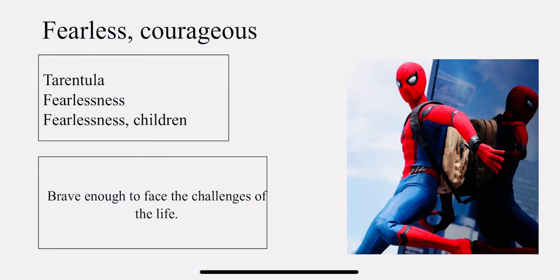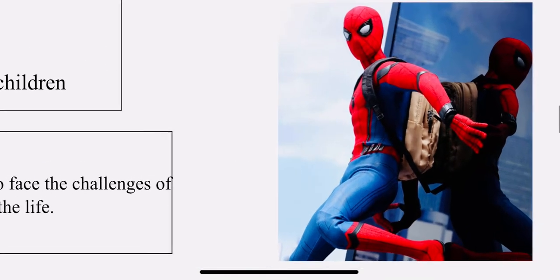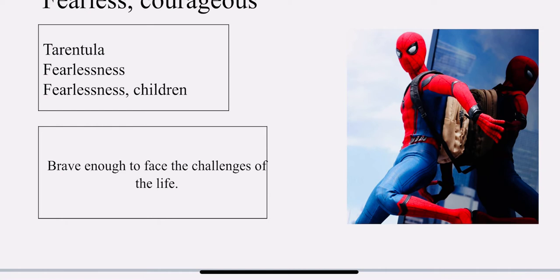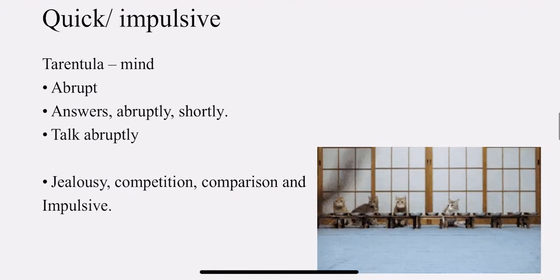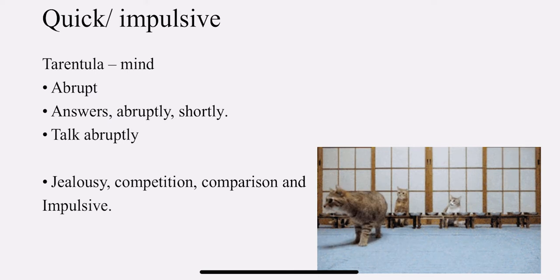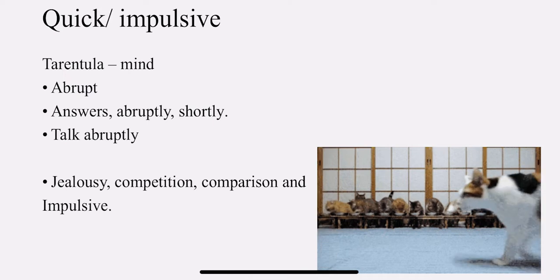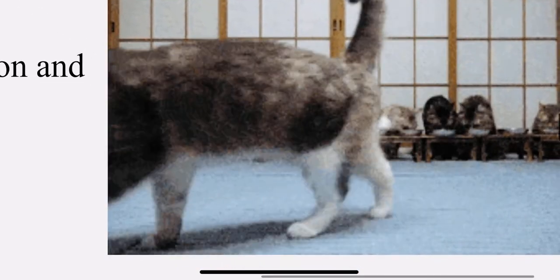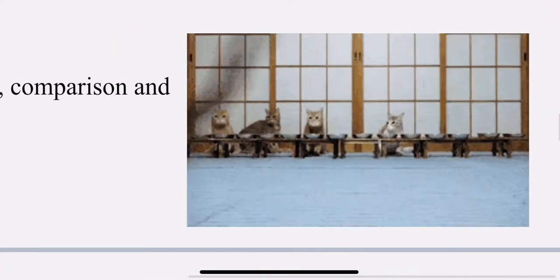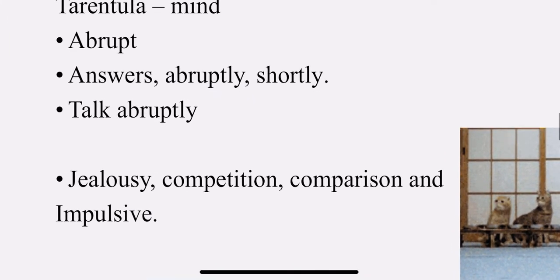They are fearless and courageous. Tarantulas are fearless — fearlessness is found in the children. They are brave enough to face the challenges of life. The fear of death. Tarantula mind is abrupt — they answer abruptly and shortly, they talk abruptly. You cannot find a calm sorted behavior in spider groups; they are abrupt. They move abruptly. Jealousy. Competition, comparison, and impulsive — there is competition, comparison, and jealousy.